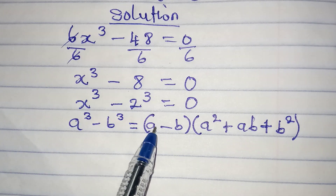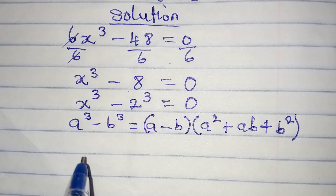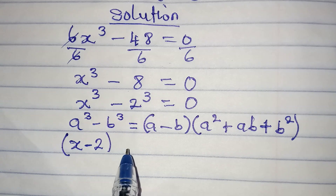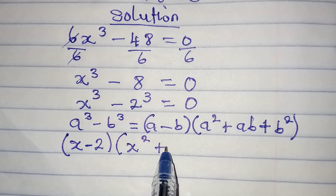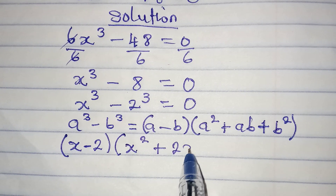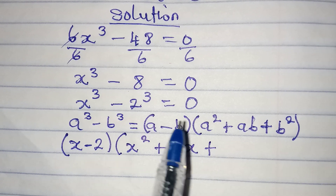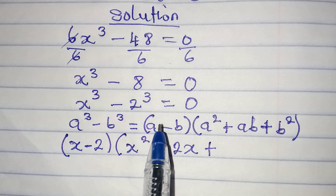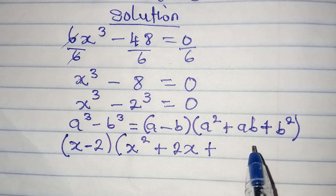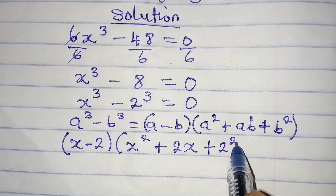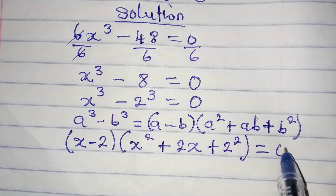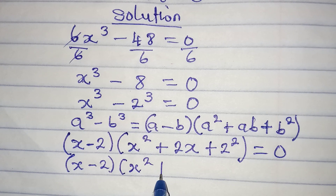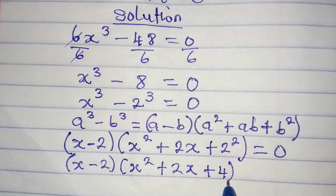In place of a we have x, so we write x minus 2 in the first bracket. In the second bracket, a squared becomes x squared, then plus ab becomes x times 2 which is 2x, then plus b squared which is 2 squared. So we have x minus 2 times x squared plus 2x plus 4, all equal to 0.